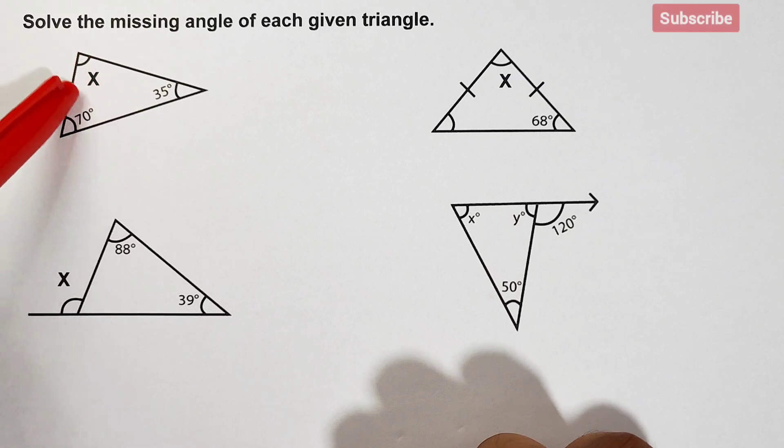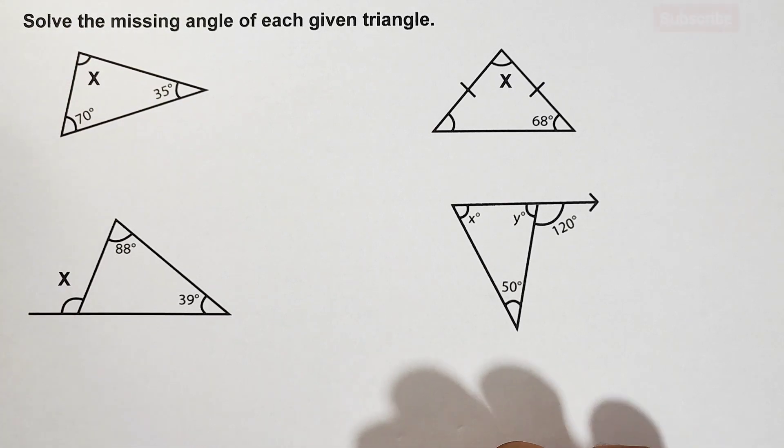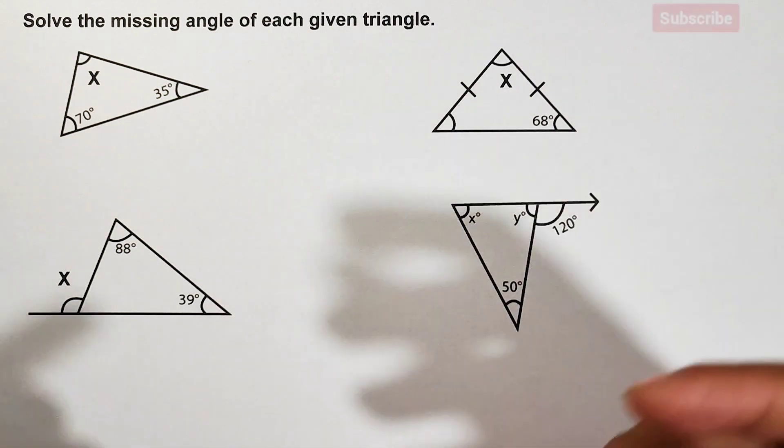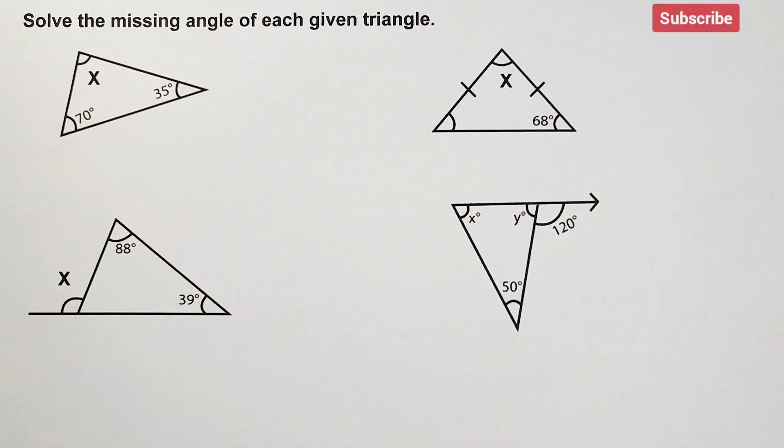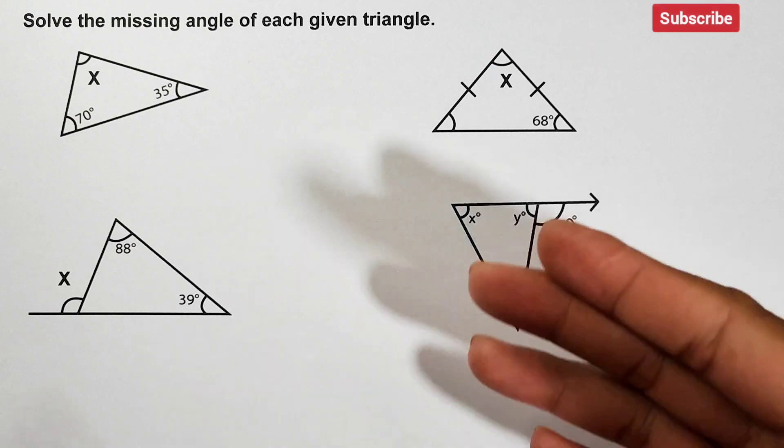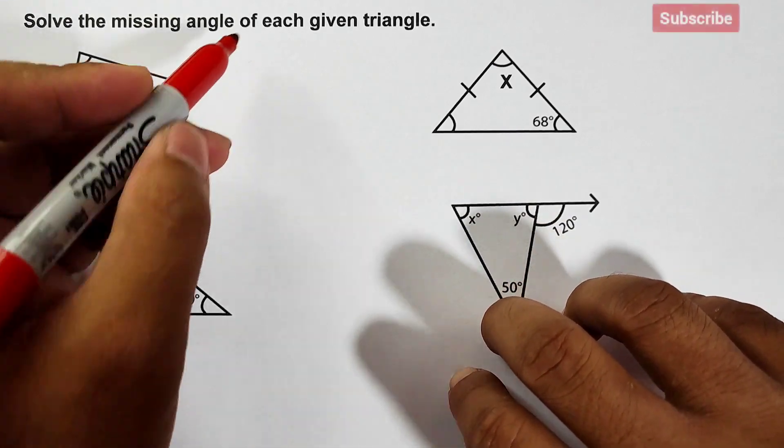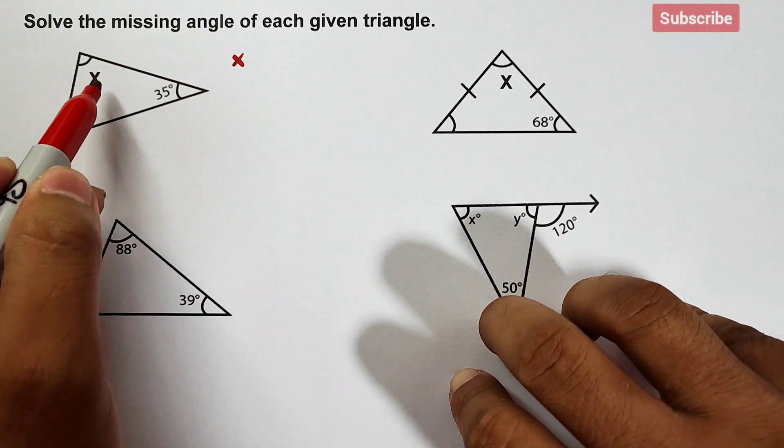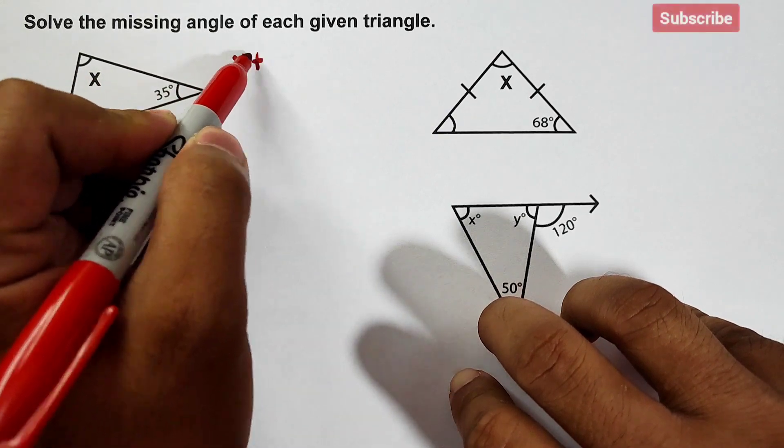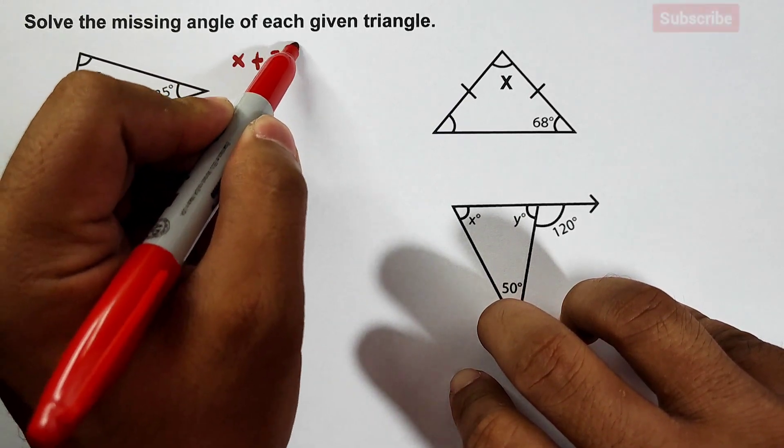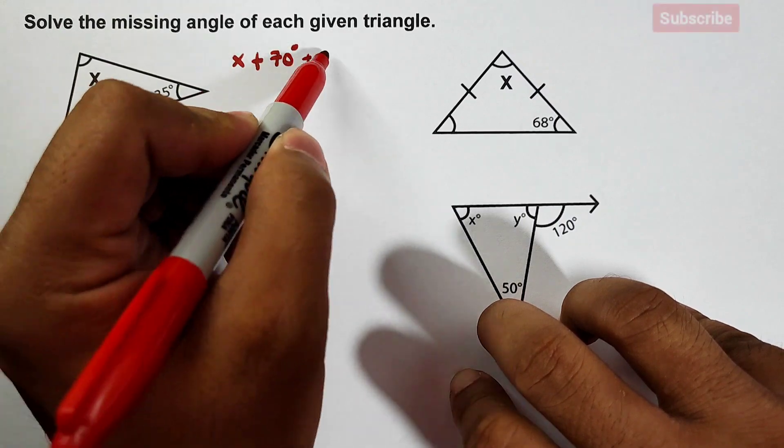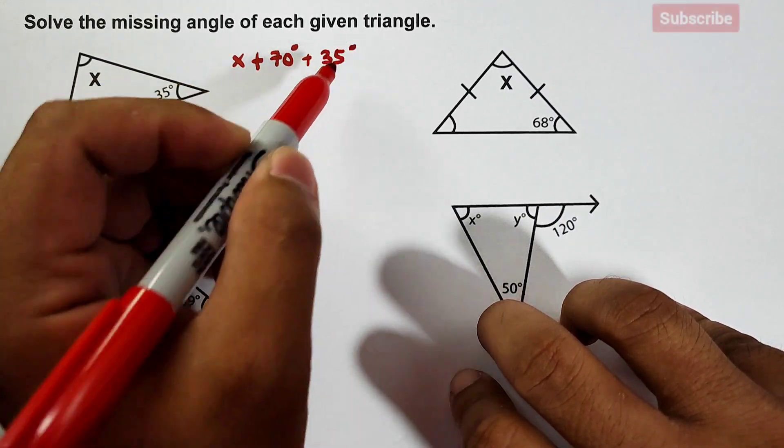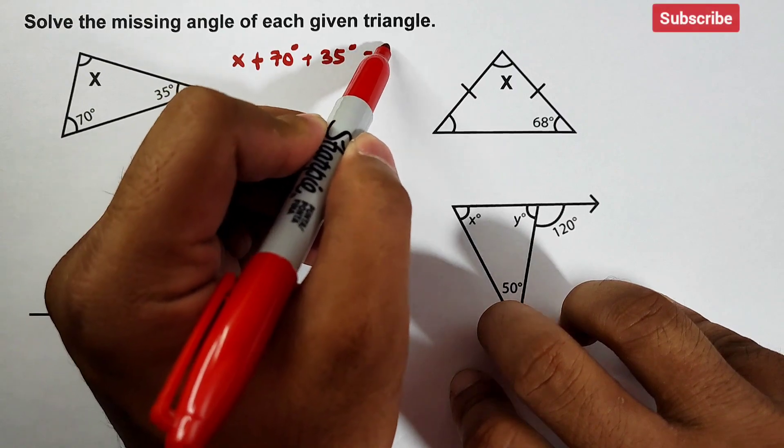So we are asked to find what is the measurement of this angle. Basically the simple concept that we'll use here is that we need to remember that in any given triangle, the sum of the three angles is equal to 180 degrees. Meaning to solve this one, this is the proper way: we will add them, that is x plus 70 degrees plus 35 degrees, and all of them are equal to 180 degrees.